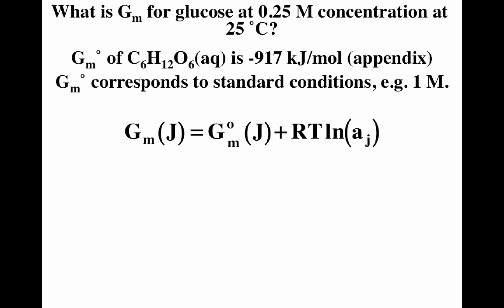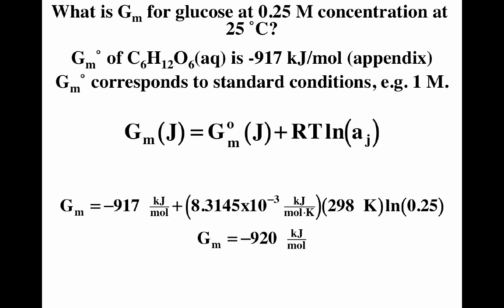If we have glucose at 0.25 molar concentration at 25 degrees Celsius, what is the non-standard Gibbs free energy? We can use that equation. The standard Gibbs free energy of formation for glucose is minus 917 kilojoules per mole, corresponding to standard conditions of 25 degrees Celsius and one mole per liter. We assume ideal solution, so the activity for glucose equals concentration divided by one mole per liter, making it unitless — because if you're taking the natural log of something, it has to be unitless. We get the non-standard Gibbs free energy for glucose at 0.25 molar as minus 920 kilojoules per mole. So there is a difference.